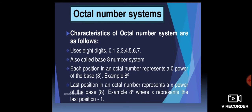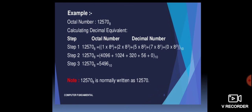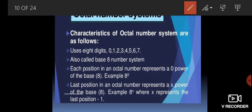Now the octal number system. The characteristics of the octal number system are as follows: we use digits 0 to 7. It has 8 numbers, so we take 0 to 7. It is also called the base 8 number system. Each position in an octal number represents 8 raised to the power 0 at the rightmost position, just like in binary we had 2 raised to the power 0.